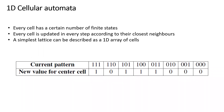Because every cell has itself and its two neighbors, and all of them can have two different states, one or zero. It's two to the power three. So this set of eight rules determines the different kinds of 1D cellular automata models.